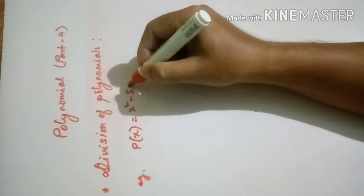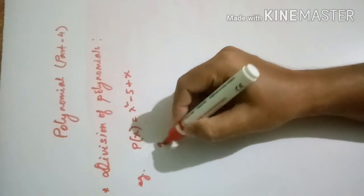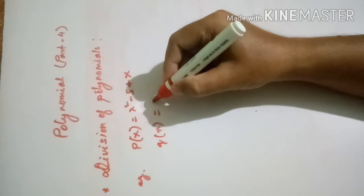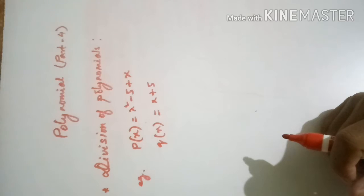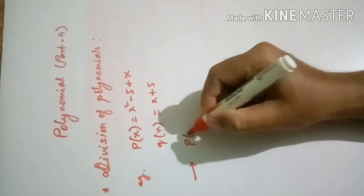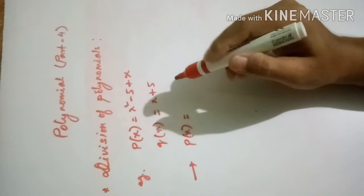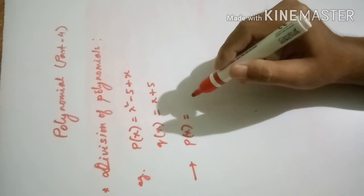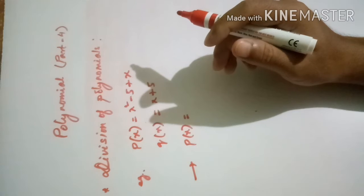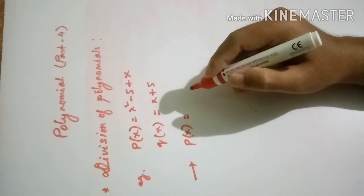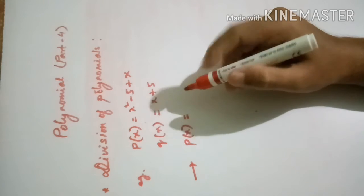I will give a simple example. Let p(x) = x² − 5 + x, and q(x) = x + 5. We have to write p(x) in standard form. Standard form means the polynomial is written in order of powers of the variable — from highest power to lowest power. So: x², then x, then the constant.